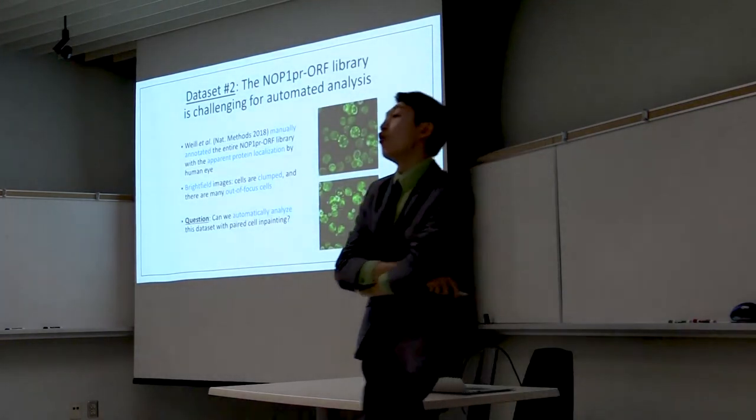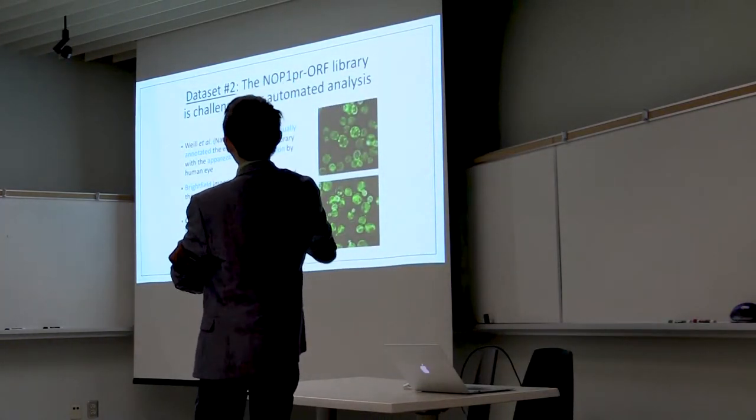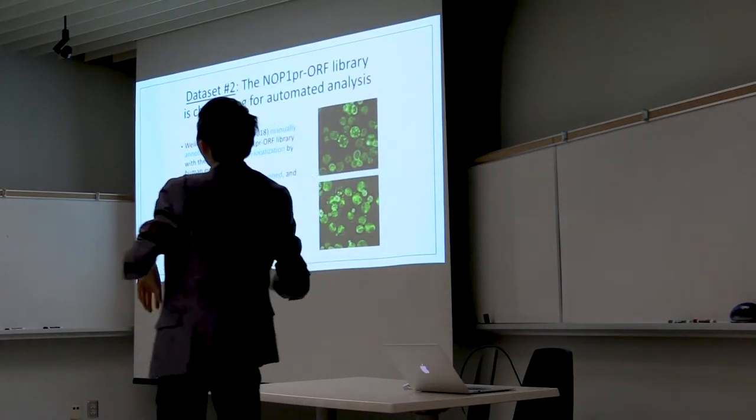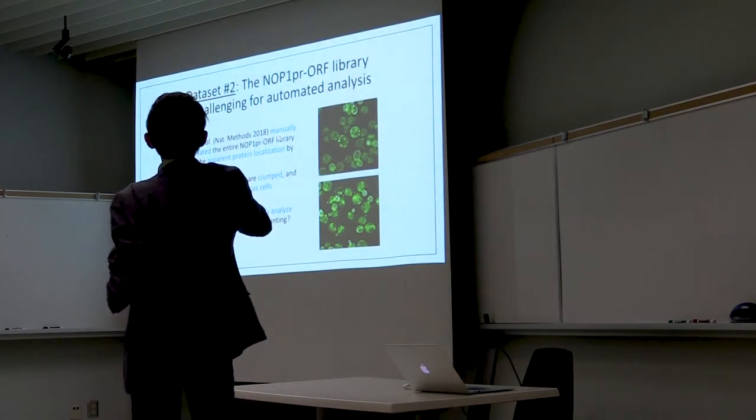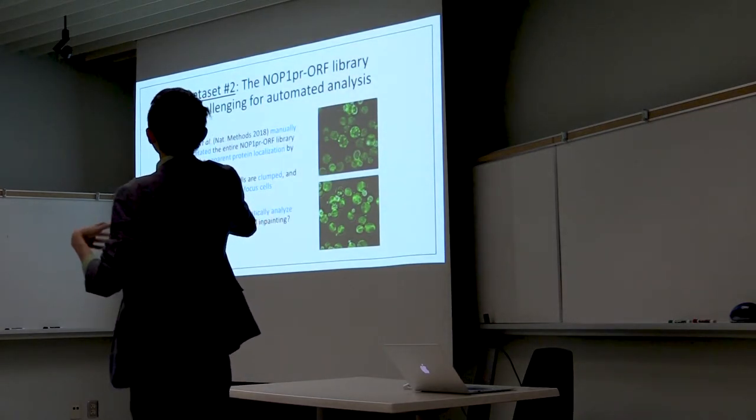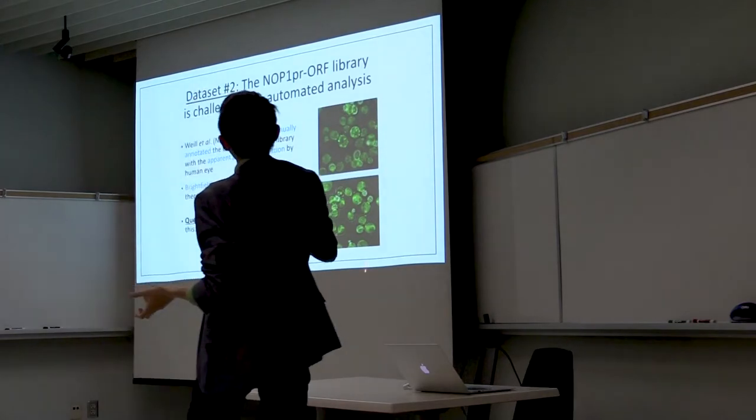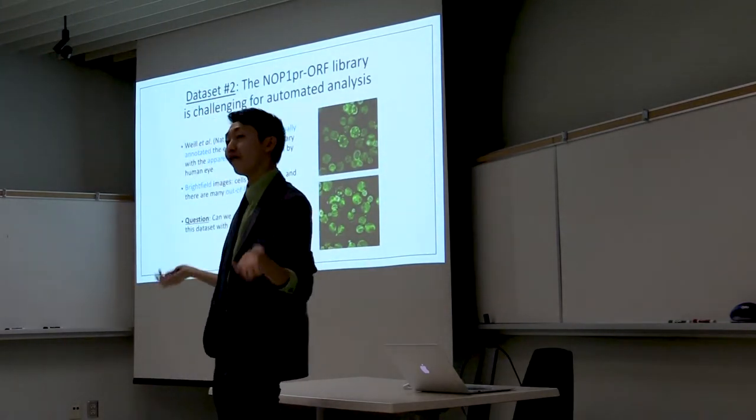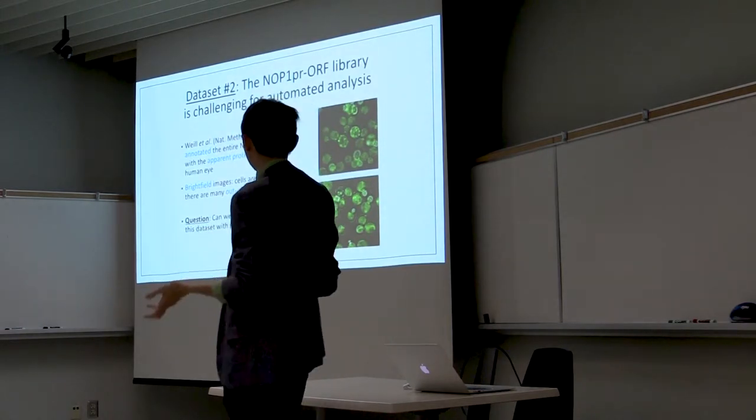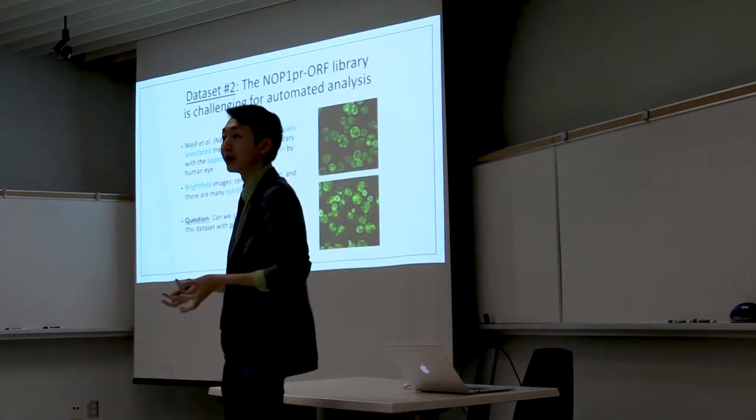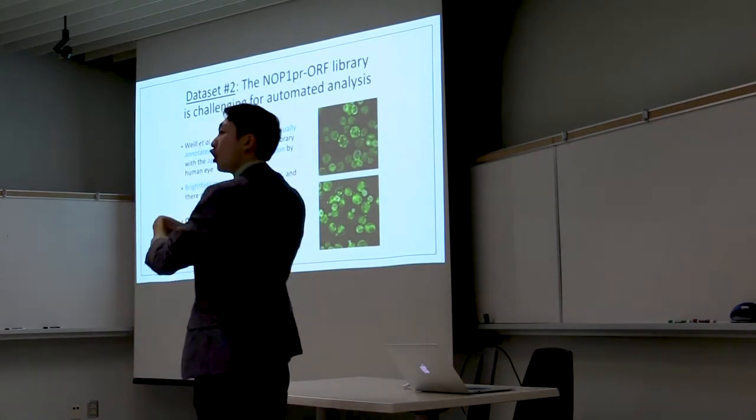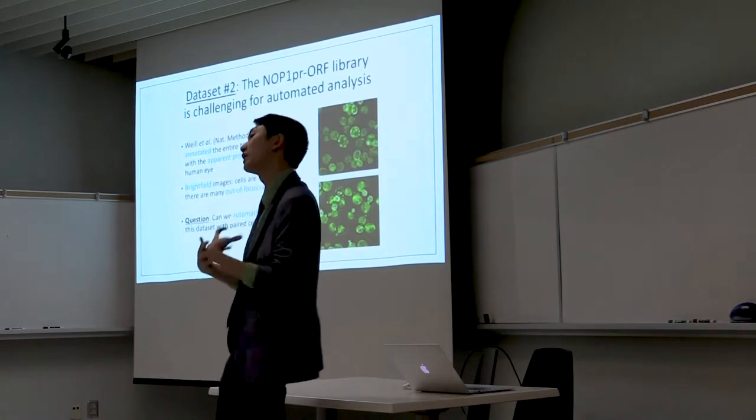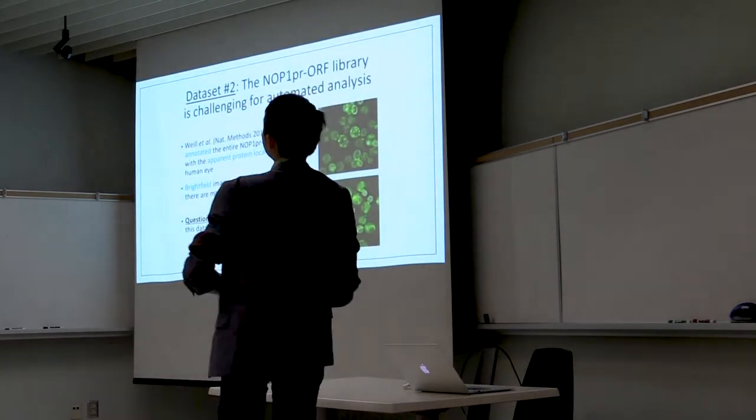The second dataset that I want to show you is called the NOP1 promoter-GFP library, and it is associated with this Chong et al. paper that I just cited. So what these guys did is that they manually annotated the entire library with the current localization by eye. They looked at these images and said, this is the Golgi, this is the mitochondria. Now it's kind of obvious why they did, looking at the images, why they decided to do this manually. They're not really suited to automated analysis. They're bright field images, they're self-fluorescent, they're hard to segment, there are overlapping cells, there are many out of focus cells, so I think they just gave up on trying to automate this analysis in the first place.